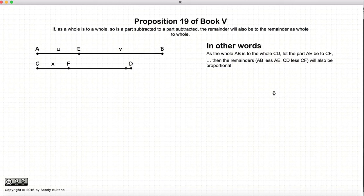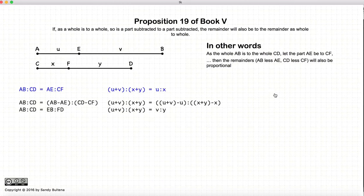Now in this proposition we have two ratios: the ratio AB to CD and the ratio AE to CF, and these two ratios are equal. This proposition states that if those two ratios are equal, then EB to FD will be of the same ratio.